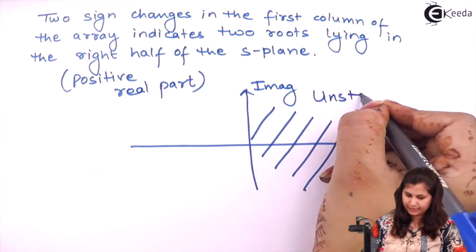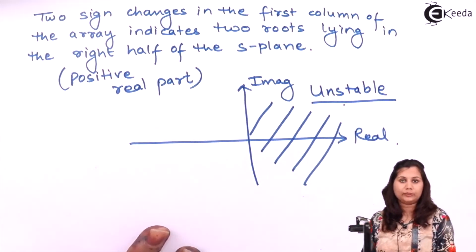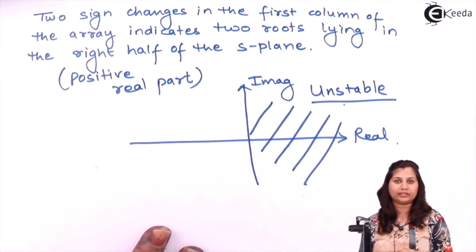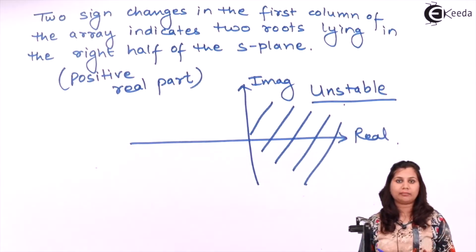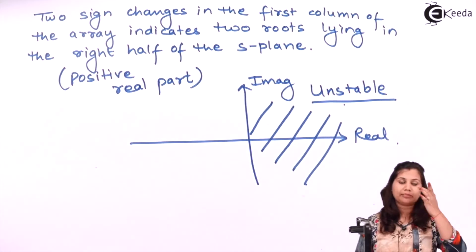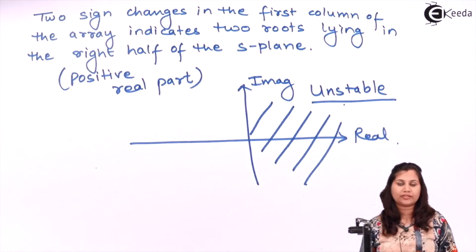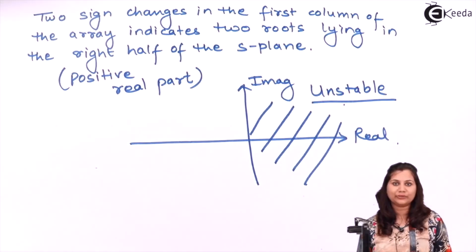So the system is unstable. To summarize: we first confirmed the characteristic equation with all coefficients present, then determined the Routh Array, and then checked the first column for sign changes. There were two sign changes, indicating two roots on the right-hand side of the s-plane, so the system is unstable. I hope this problem is clear to you. Thank you.